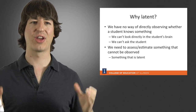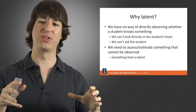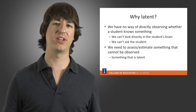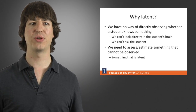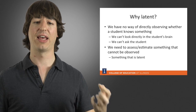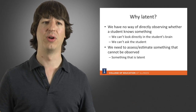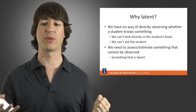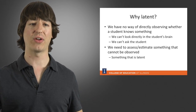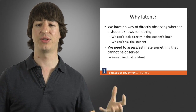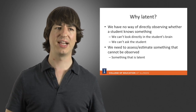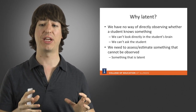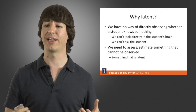We can't go and look at the student's brain to see if they have the right connection. And we can't really ask the student either, because although some students are going to be really good at telling us what they do and don't know, some students might think they know something but they don't, or they might not realize that they know something when they do. So we need to estimate something that can be observed — that's why we call it latent.